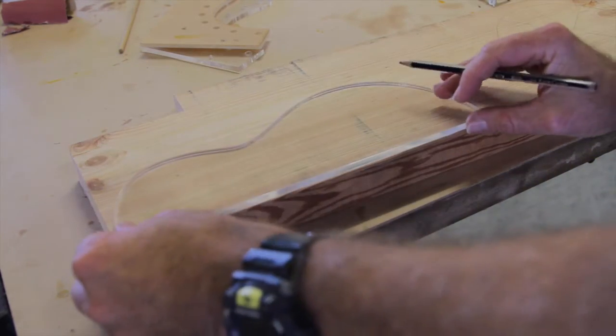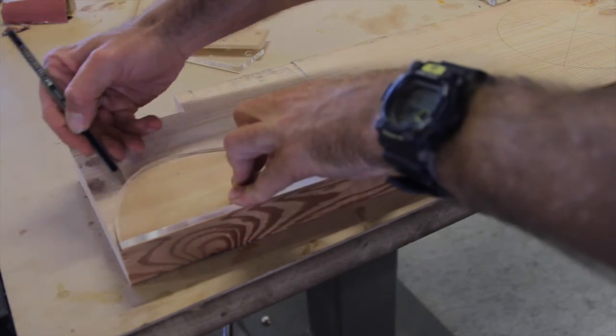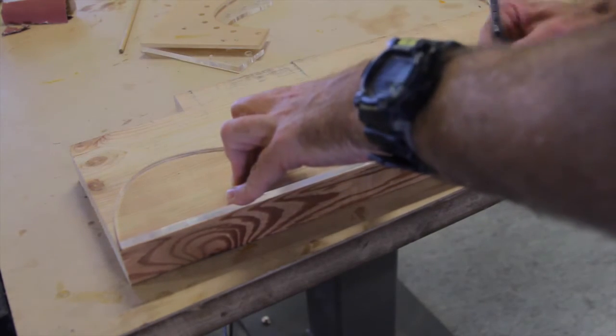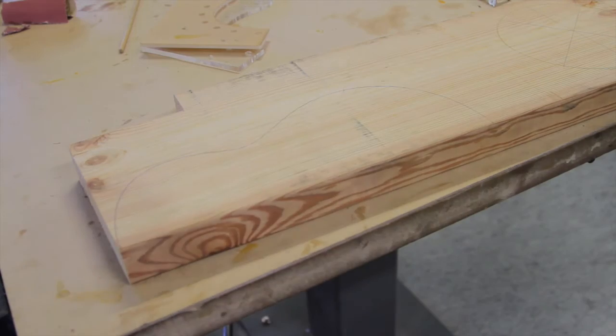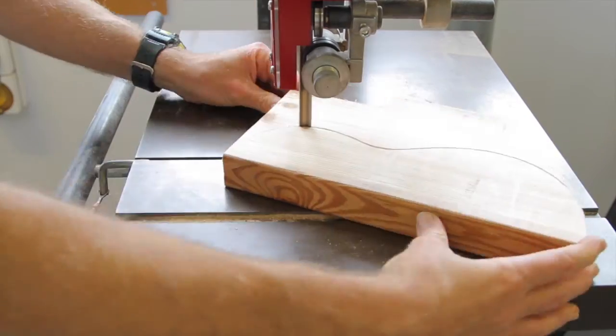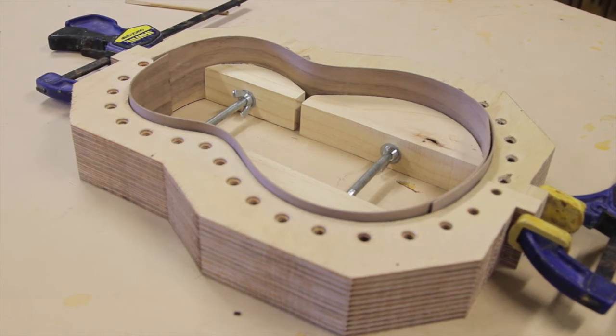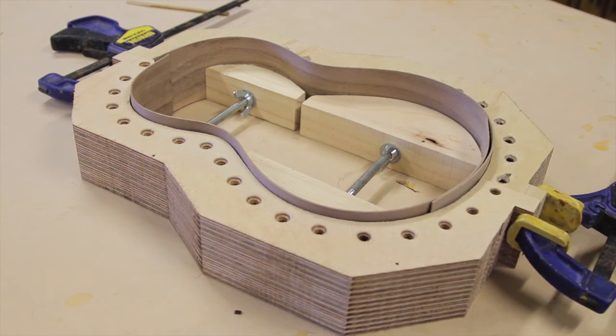So the last stage of making side moulds is to create the inserts in the centre. Using the template created from the inner line on the profile shown in the PDF at the start of this video, mark out some 35 or 40mm thick pine and cut it out. Then by using some threaded rod and wing nuts you can use these inserts to help maintain the shape of your sides.